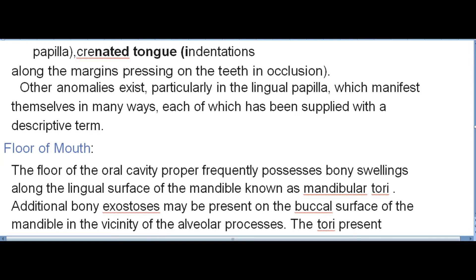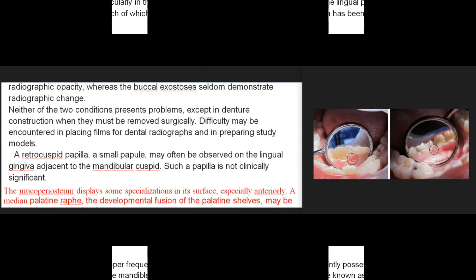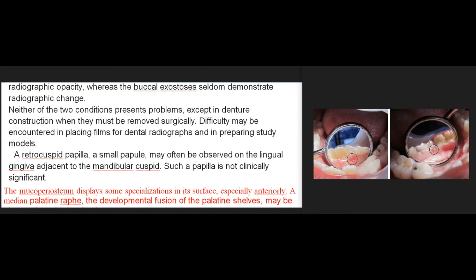The floor of the oral cavity proper frequently possesses bony swellings along the lingual surface of the mandible known as mandibular tori. Additional bony exostoses may be present on the buccal surface of the mandible in the vicinity of the alveolar processes. The tori present radiographic opacity whereas the buccal exostoses seldom demonstrate radiographic change. Neither condition presents problems except in denture construction, when they must be removed surgically. Difficulty may also be encountered in placing films for dental radiographs and in preparing study models.